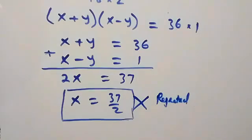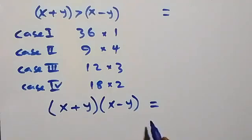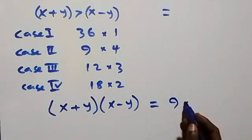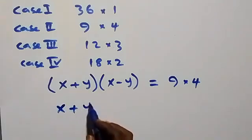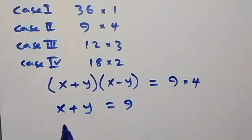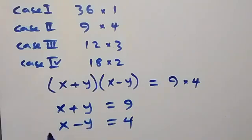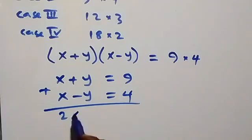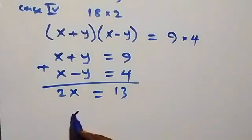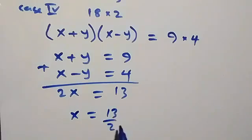For Case 2: (x plus y)(x minus y) = 9 times 4. This implies x plus y = 9 and x minus y = 4. Solving simultaneously by adding: 2x = 13, so x = 13 over 2. This is not a natural number either, so it is rejected.